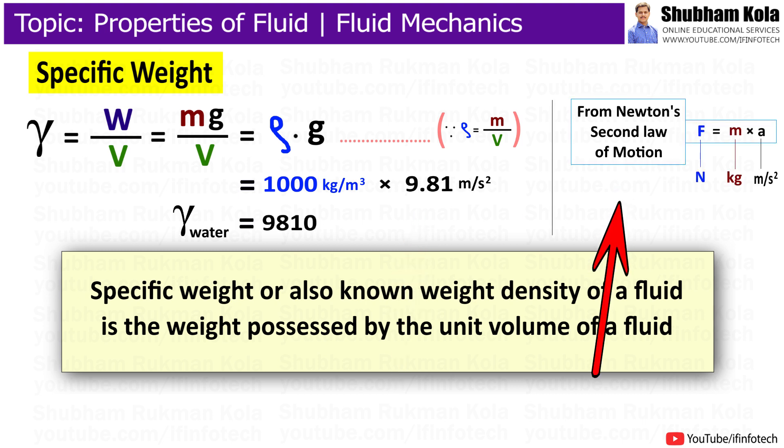And we know that from Newton's second law of motion, force equals mass times acceleration due to gravity. Here, force is in Newtons, mass in kg, and acceleration is in meters per second squared. Therefore, specific weight of water will be 9810 Newtons per meter cube.